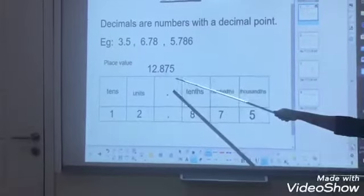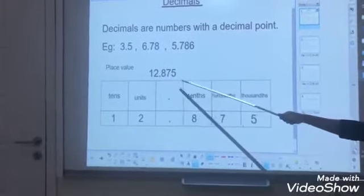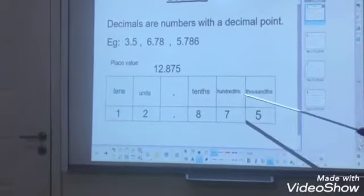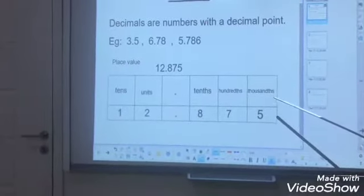But after the point, after the decimal point, the first number we call tenths. And the second number, hundredths. And the third number will be thousandths.